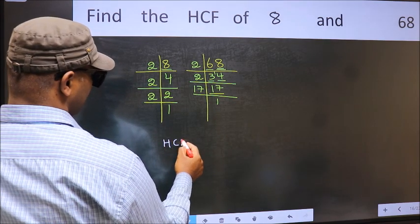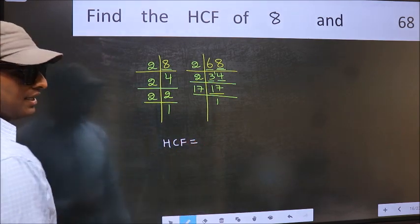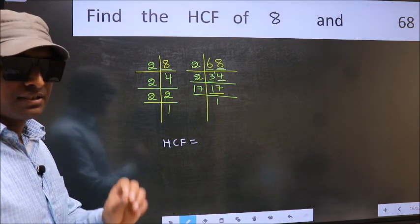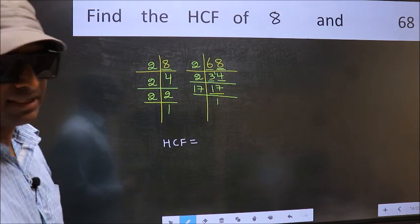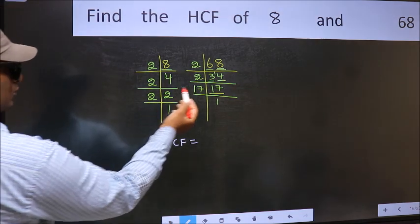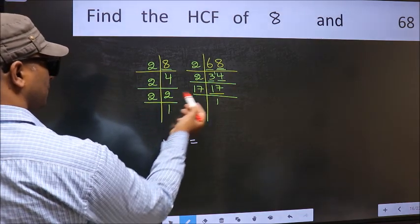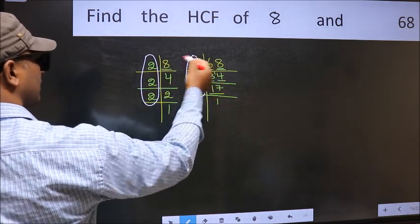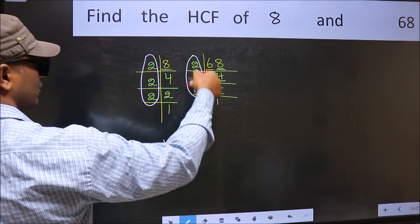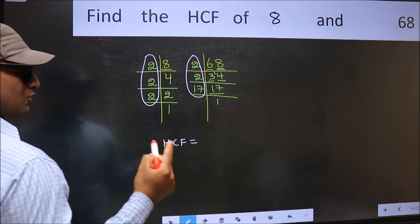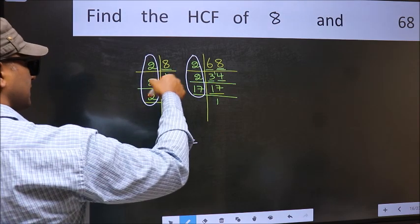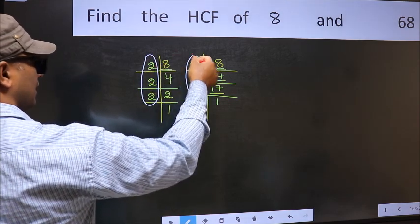Therefore our HCF is the product of the numbers which should be present in these two places. That is here and also here. Here and also here.